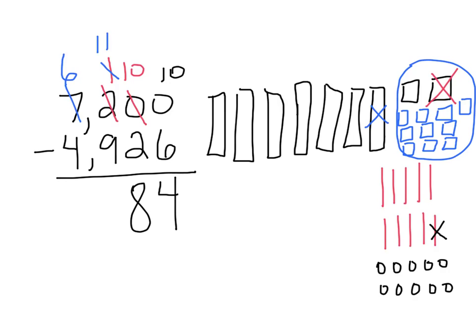Now, I'm ready to move on. 11 take away 9 is 2, and 6 take away 4 is 2 for a difference of 2,284. How'd you do?